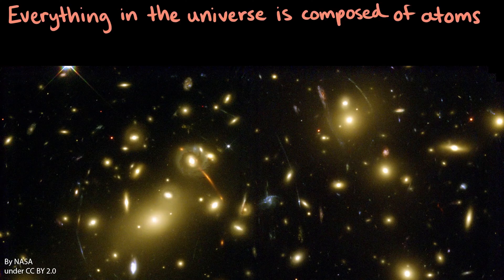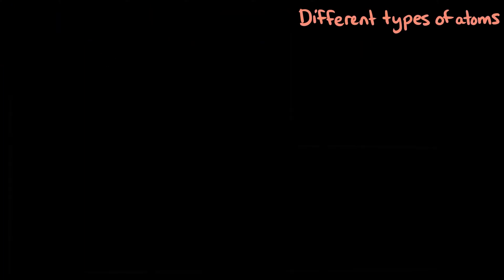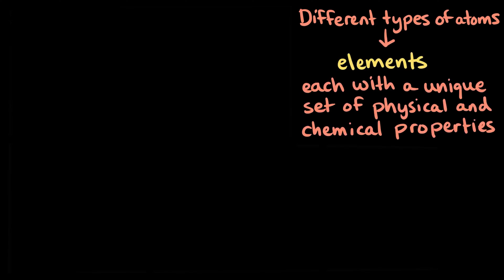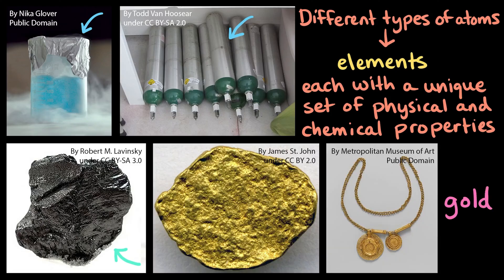We know that everything in the universe is composed of atoms, but not all atoms are the same. There are many different types of atoms called elements, each with a unique set of physical and chemical properties. Many elements are probably familiar to you. Oxygen and carbon, for example, are elements and so is gold.